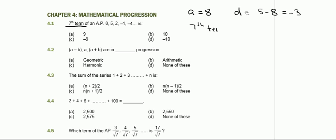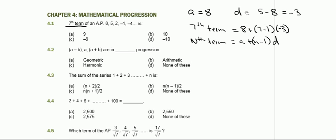The seventh term uses the nth term formula: a plus (n minus 1) times d. So the seventh term is 8 plus (7 minus 1) into d. That is 8 plus 6 times minus 3, which is 8 minus 18, giving minus 10. The answer for 4.1 is minus 10.